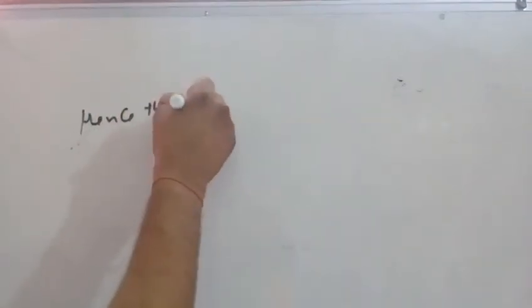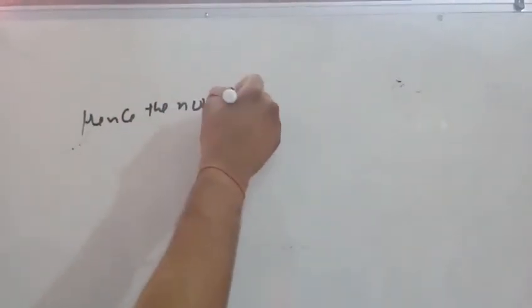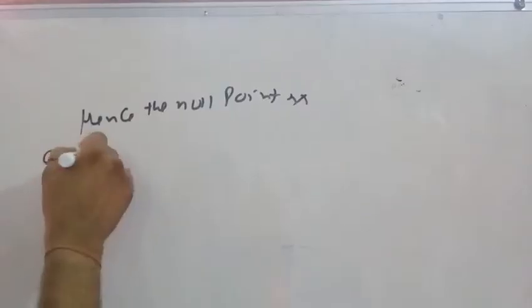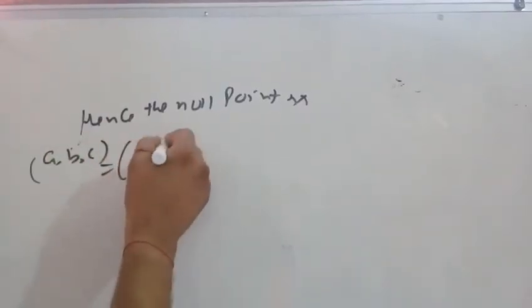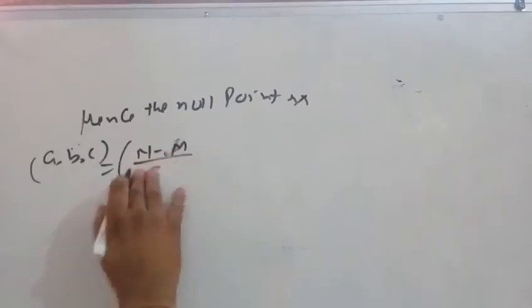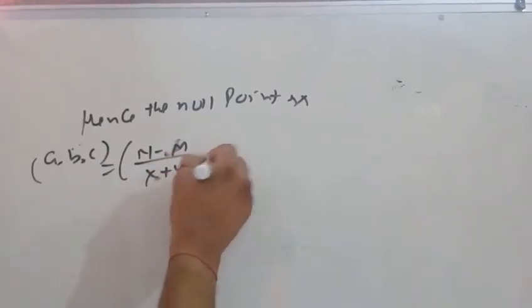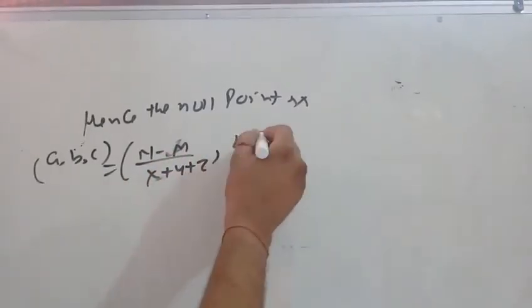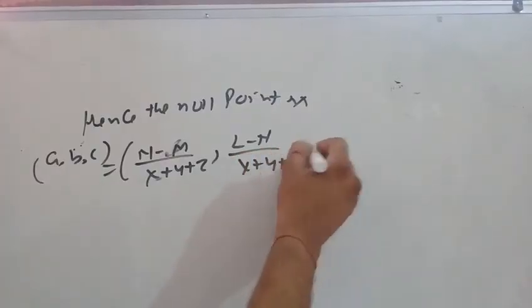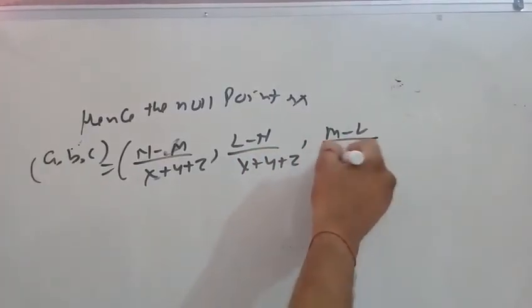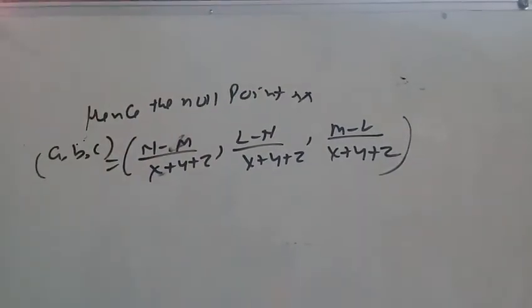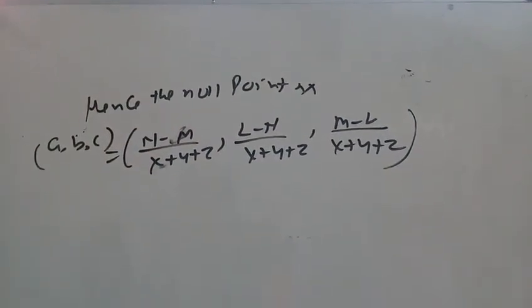Therefore the null point is: n upon (x plus y plus z), l minus n upon (x plus y plus z), and m minus l upon (x plus y plus z). These are the null points.